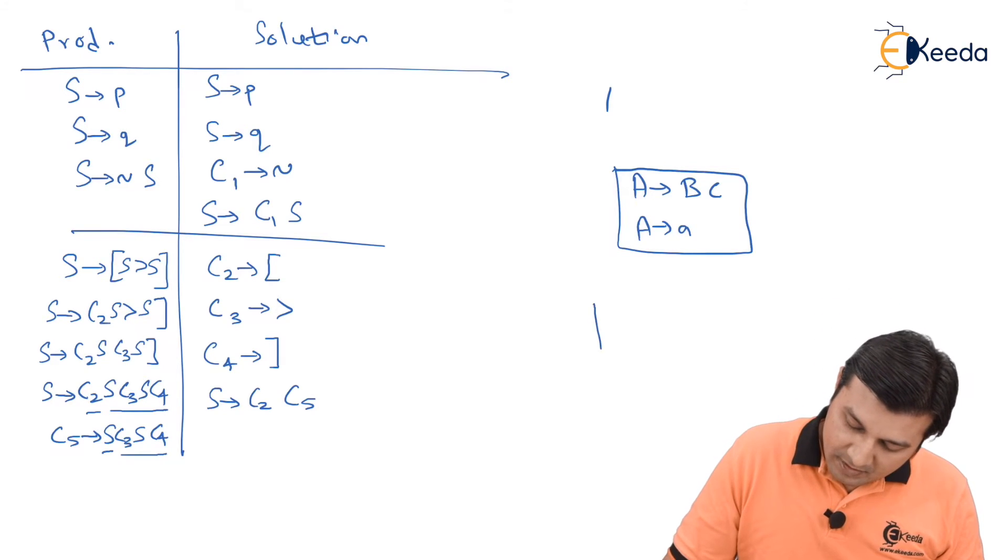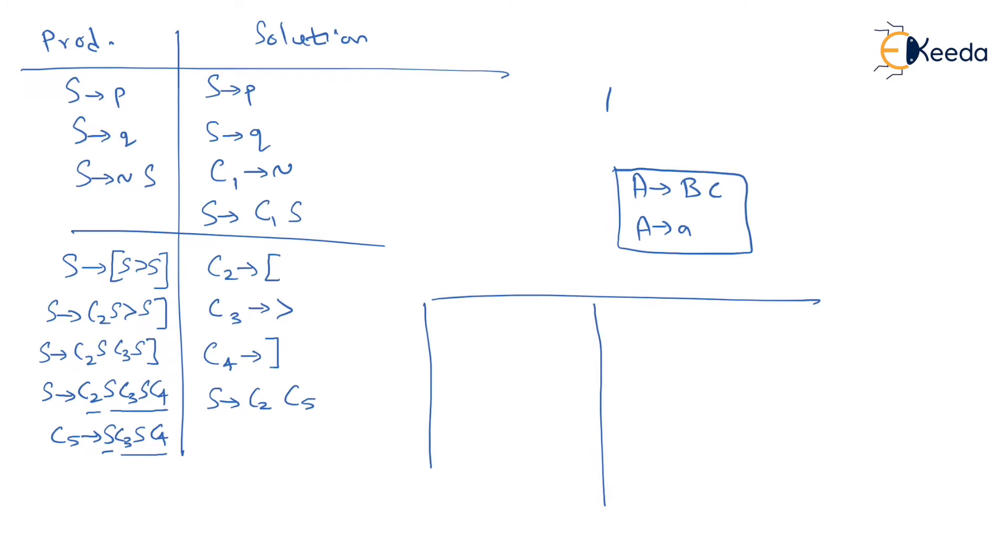Now I see can I say S is giving me C2 C5 where C5 in turn is giving me S C3 S C4. Going ahead, I say keep the first variable as it is and replace everything by another temporary variable. Therefore, C5 is going to give me S C6 where C6 in turn is giving me C3 S C4. Now, among these two productions, my C5 is already converted to CNF. Therefore, I write C5 gives me S C6 over here.